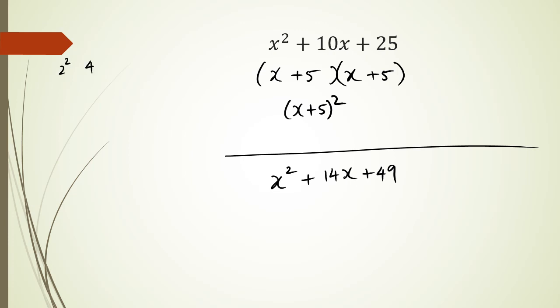So because 2 squared is 4, 3 squared is 9, 4 squared is 16, and so on. So you can see that 49, well, that's going to be 7 squared, and 7 plus 7 is 14. So straight away, you can write this as x plus 7 whole squared.